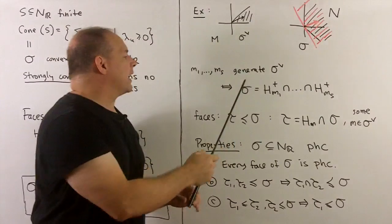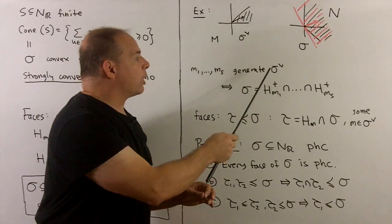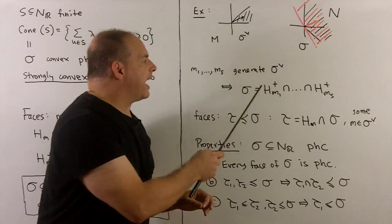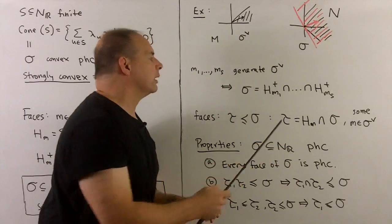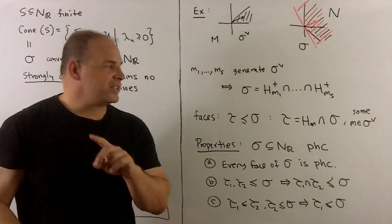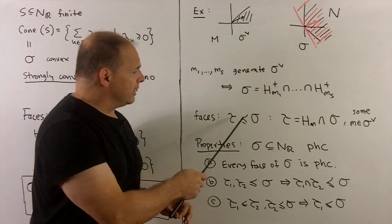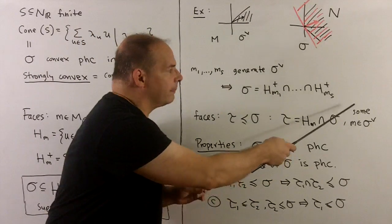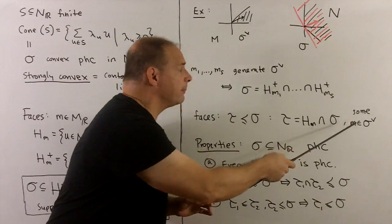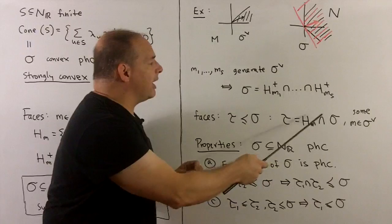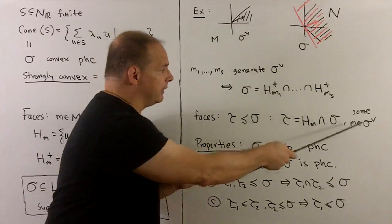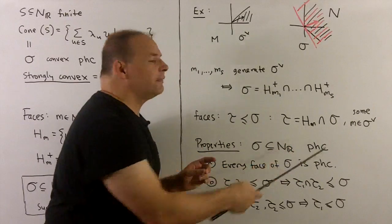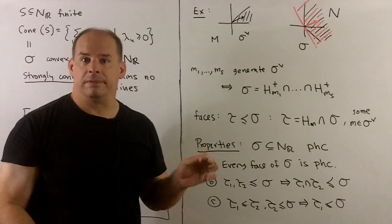If we can find a generating set m_1 through m_s for sigma dual, then we get a halfspace representation of sigma: sigma is the intersection of the halfspaces associated to m_1 through m_s. To get faces, we say tau is a face of sigma — denoted by ≤ — by considering all m in sigma-check (the dual of sigma), taking sigma and intersecting with the hyperplanes for all such m. We allow zero, which gives sigma itself, and this gives a partial ordering on the set of faces.